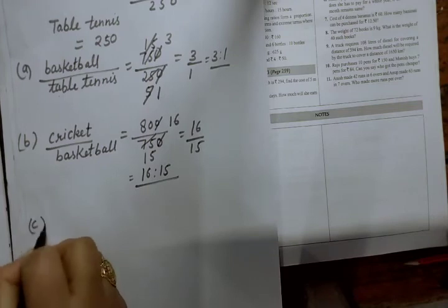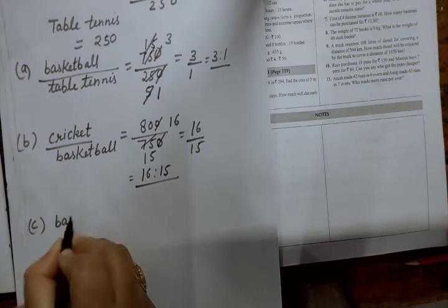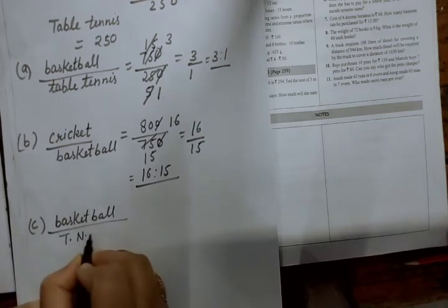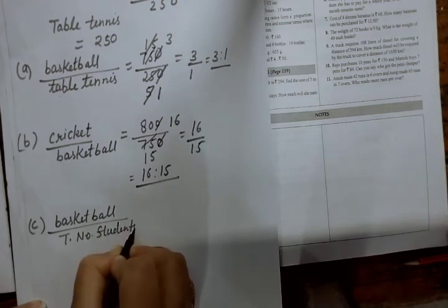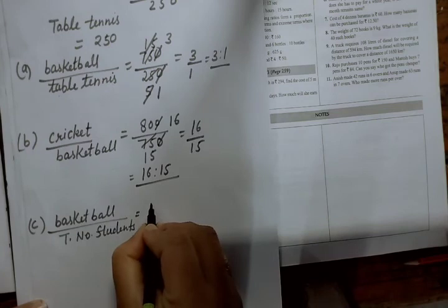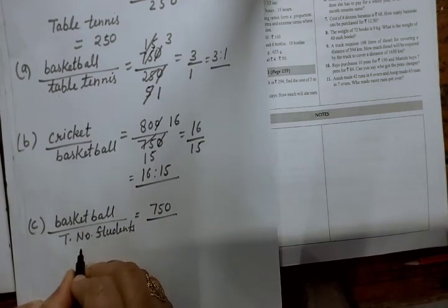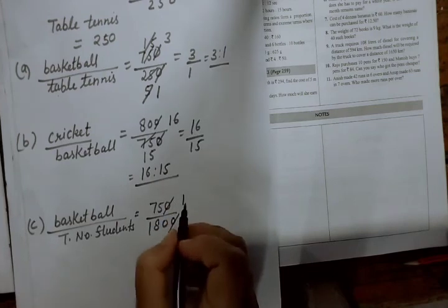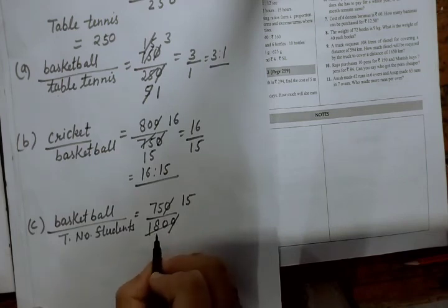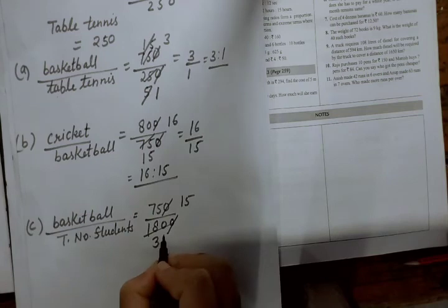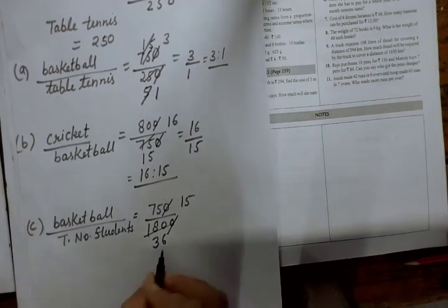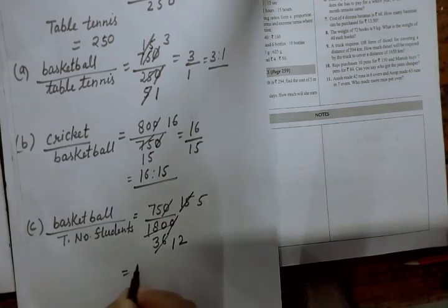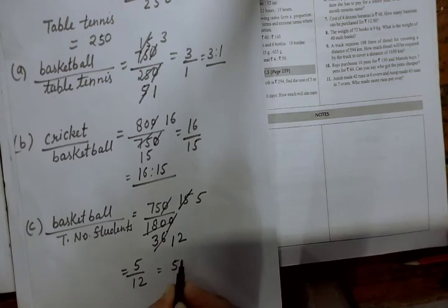Part C: number of students who opted basketball to the total number of students. Basketball is 750 upon total 1,800. Cancel zeros — 75 upon 180. Divide by 3: 25 upon 60. Divide by 5: 5 upon 12. No further cancellation, so the ratio is 5:12.